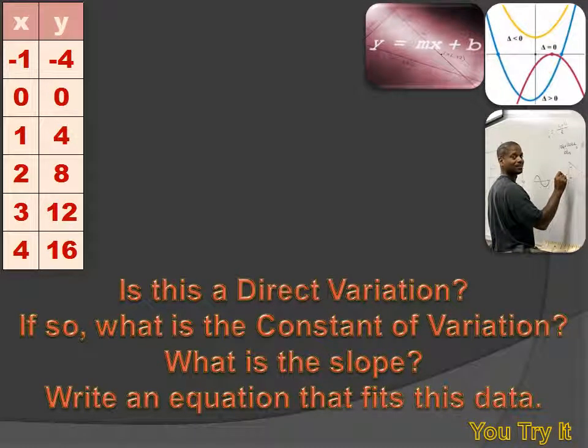This table demonstrates a relationship between x and y values. Your job is to determine if this is a direct variation. If it is, what's the constant of variation? What's the slope? And then, can you write an equation that fits this data? Hit your pause button, give it a try, and then hit your forward key to move on to my answer.